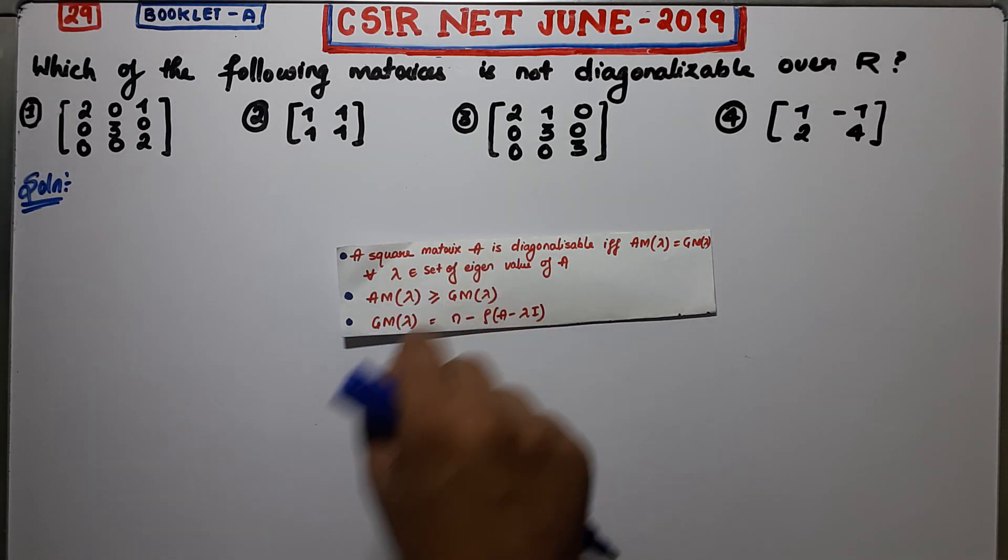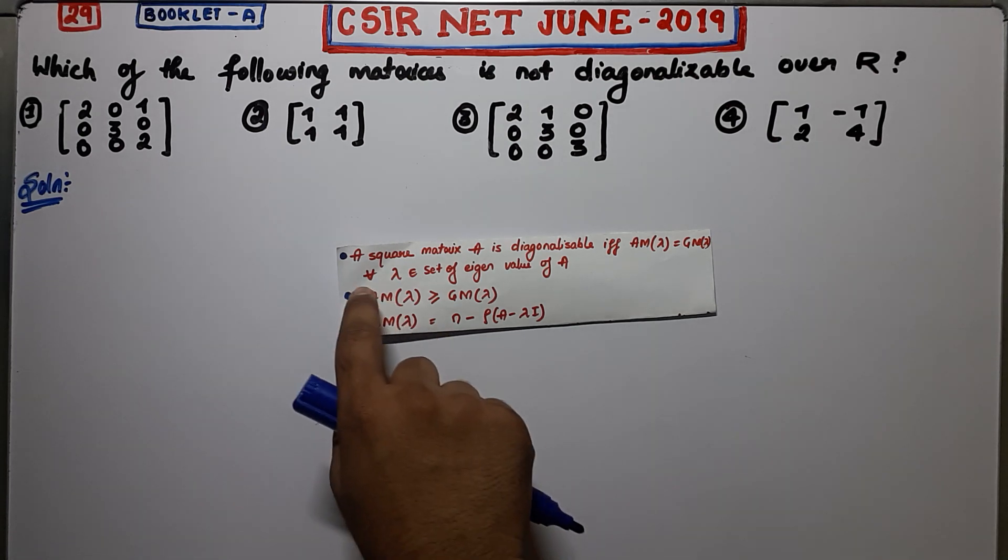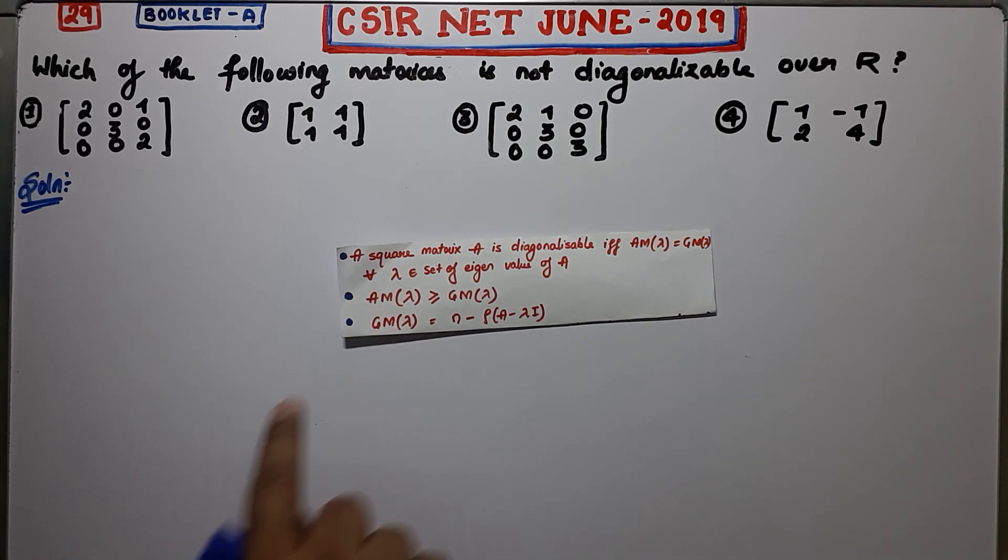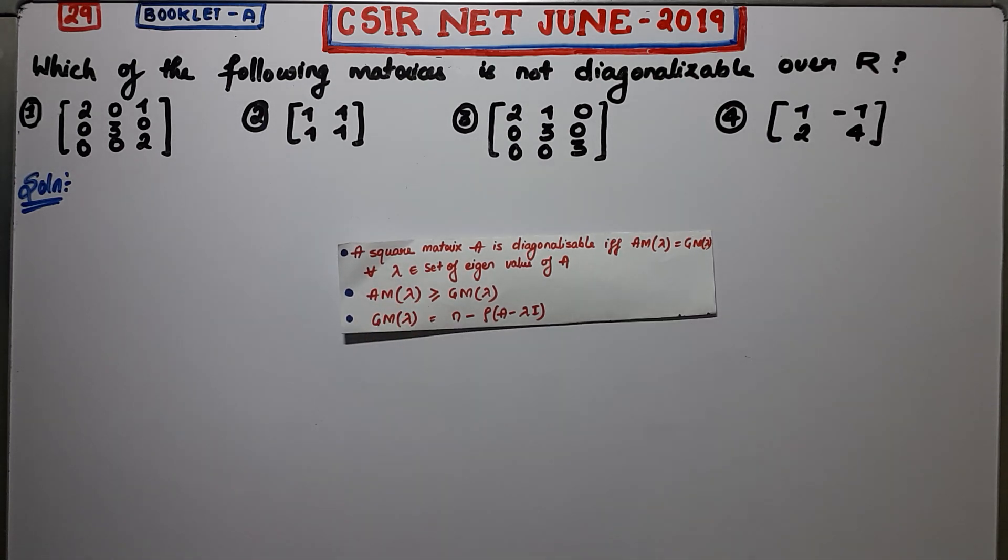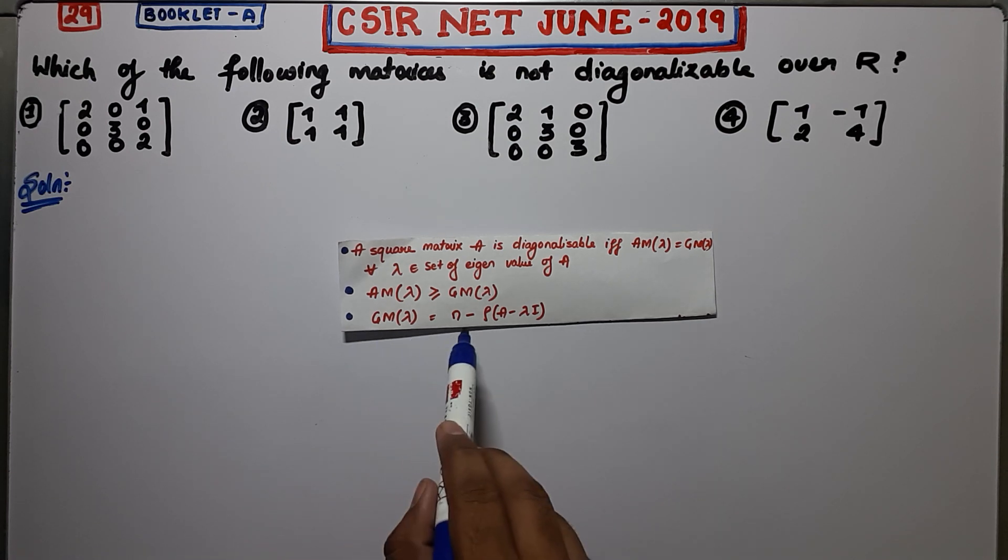Your second note suggests that algebraic multiplicity is always greater than or equal to geometric multiplicity. The third note says that geometric multiplicity is given by this formula.